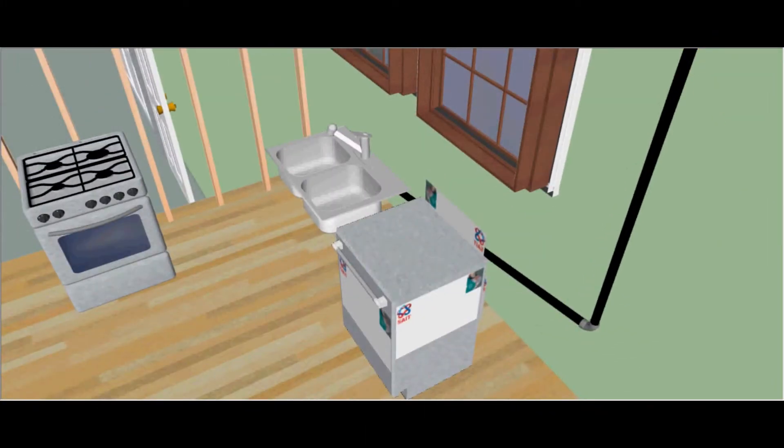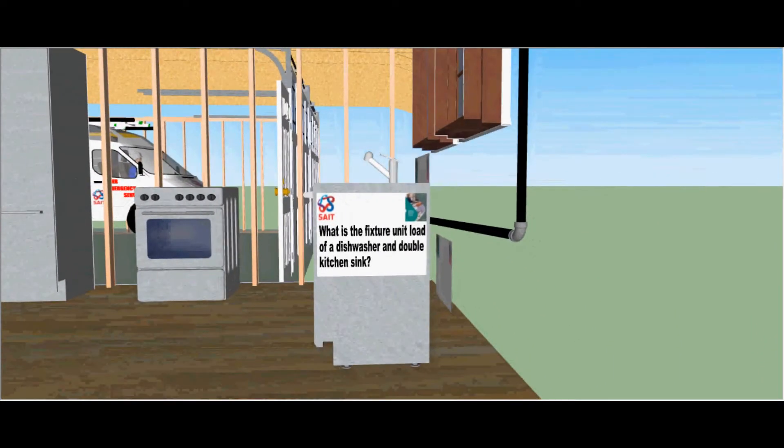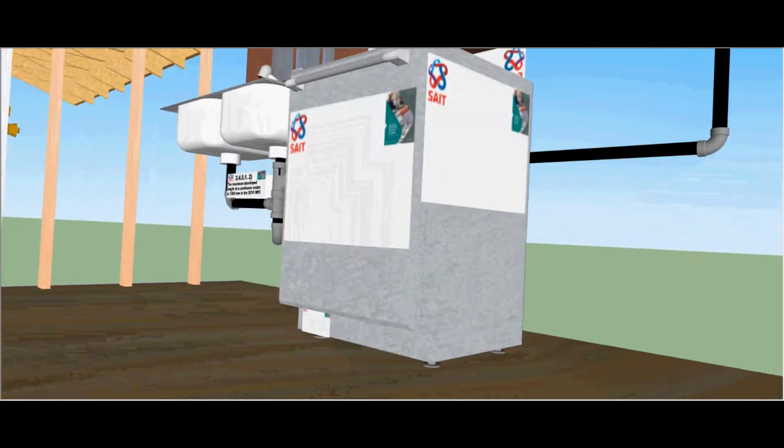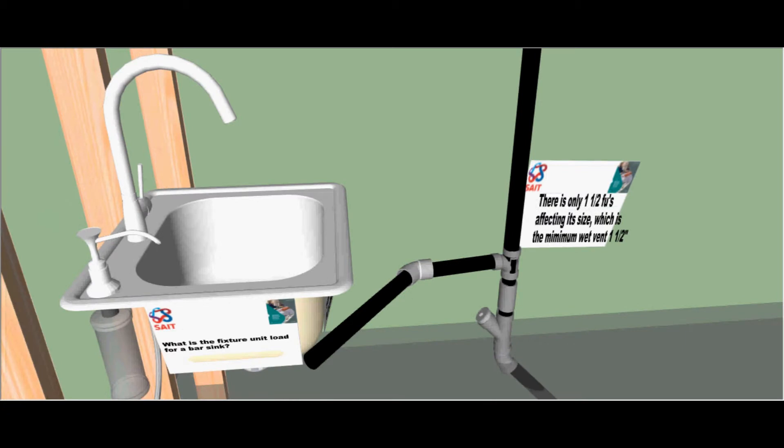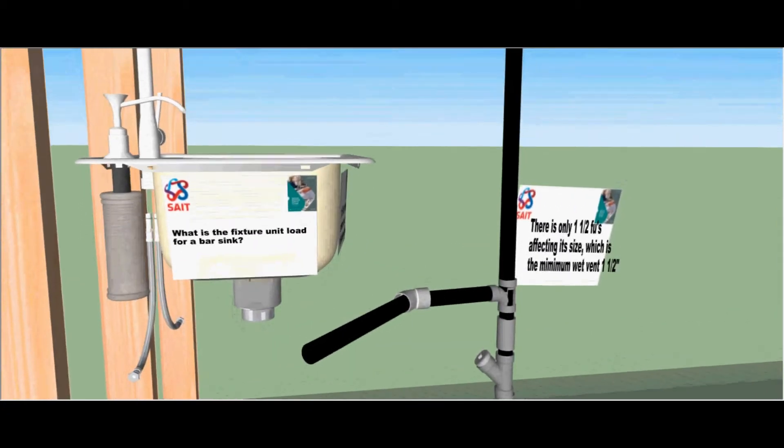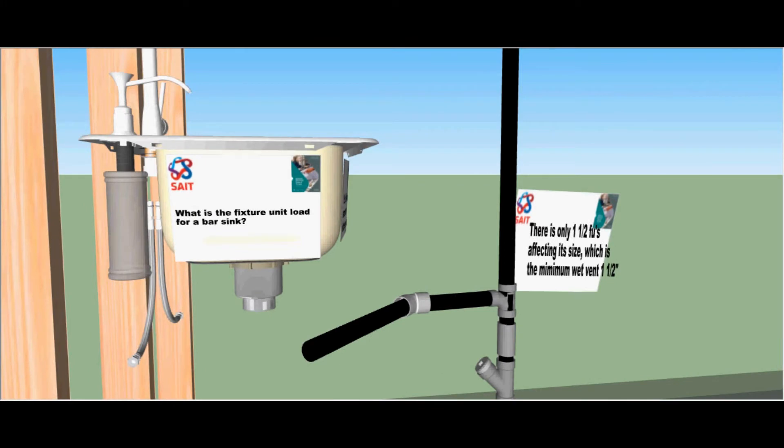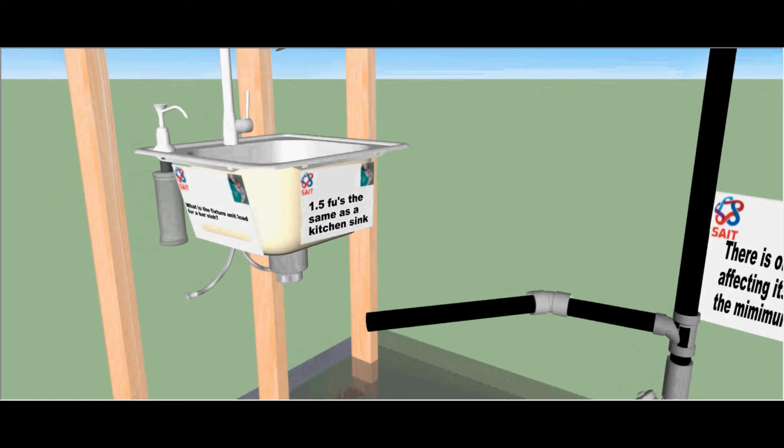Let's go down into the kitchen where we have a dishwasher and a double stainless steel kitchen sink. What is the fixture unit load for a dishwasher and a double kitchen sink? Only one and a half fixture units as they are used sporadically and not always at the same time. What is the fixture unit load for a bar sink? You can find it in table 2493 where it states that it is the same as a kitchen sink, one and a half fixture units.